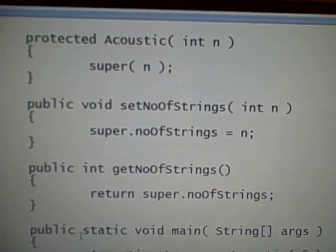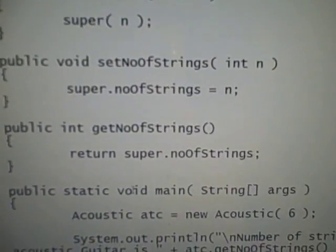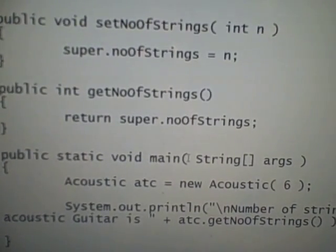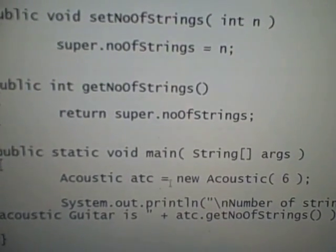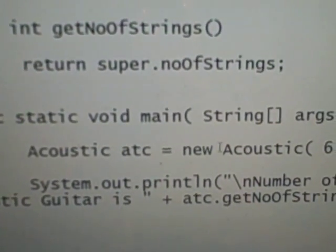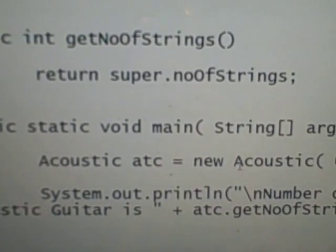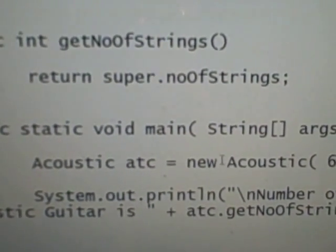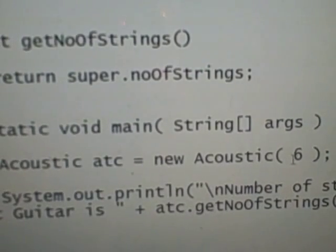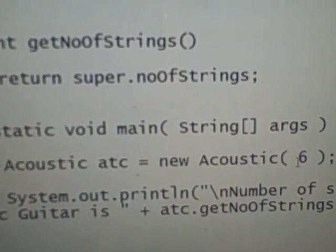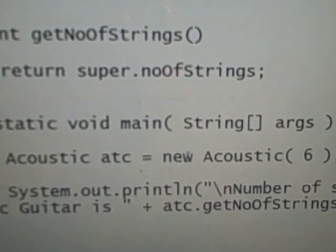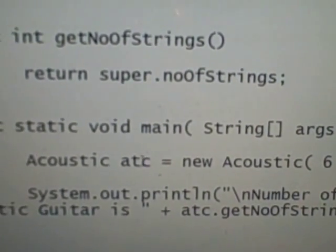And after that, we're going to go down to our main function, or main method, and declare and create an object of our subclass Acoustic. And then we're going to pass the value of 6 to our constructor and store, as usual, our reference to that object in our reference variable ATC.